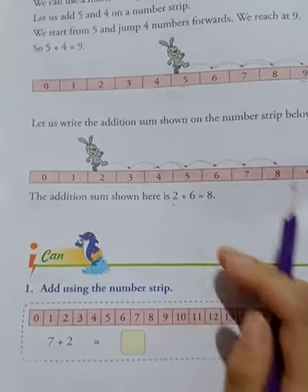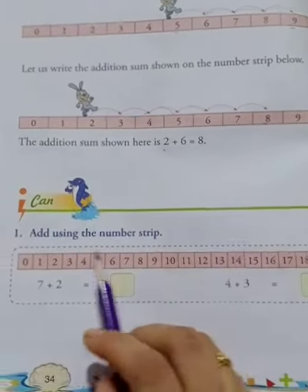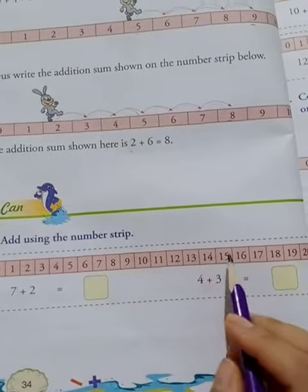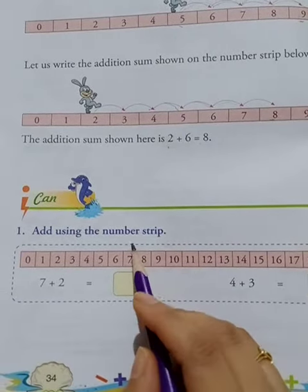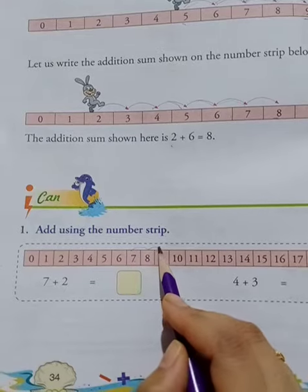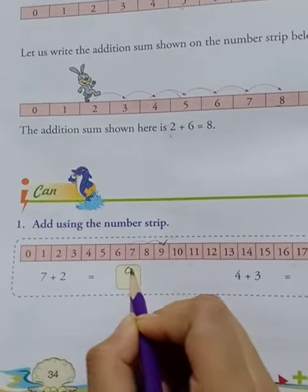Now see, seven plus two. Here is seven. We jump two: one, two. The answer is nine.